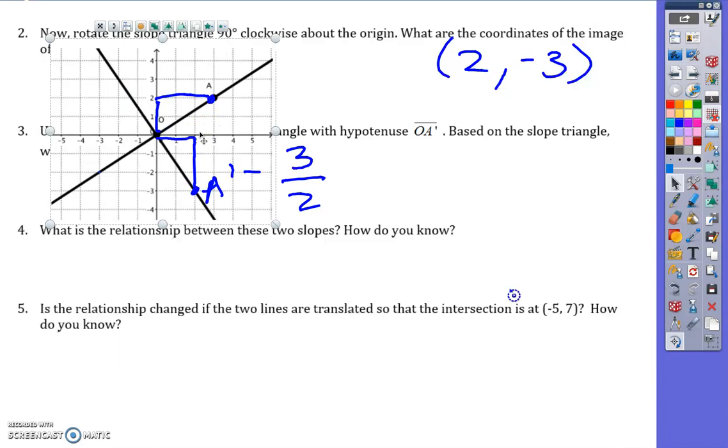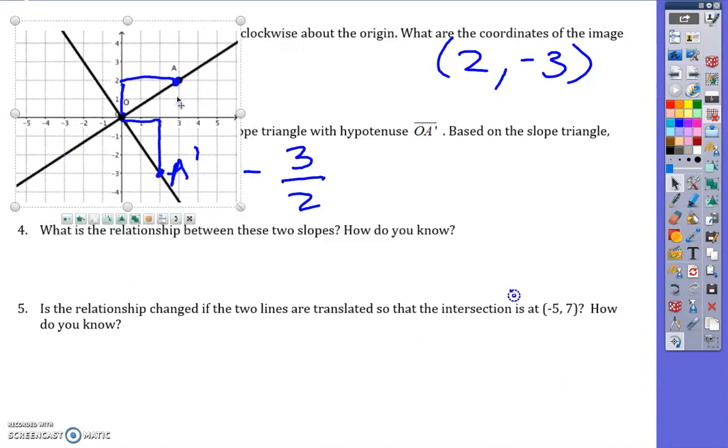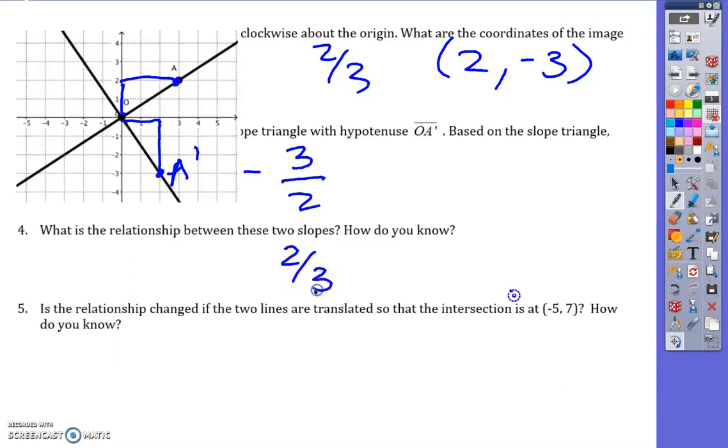What is the relationship between those two slopes? Our first one was two-thirds, and now we have negative three over two. Those are negative reciprocals.